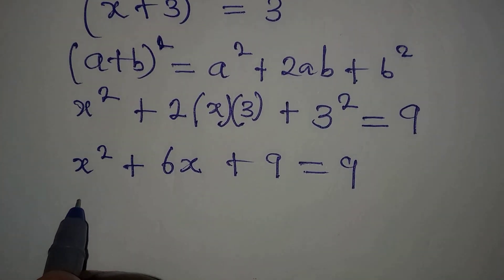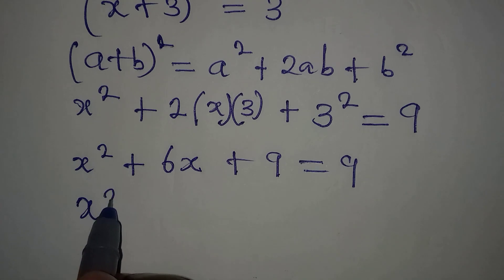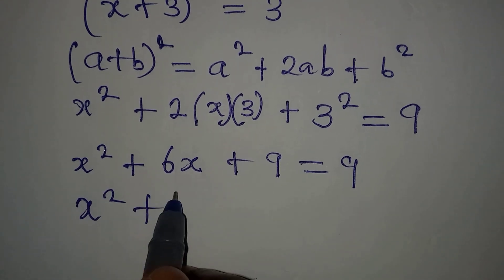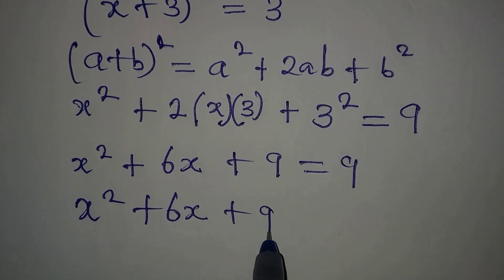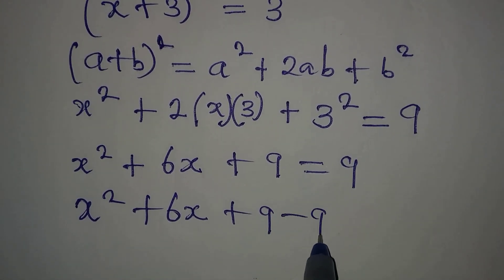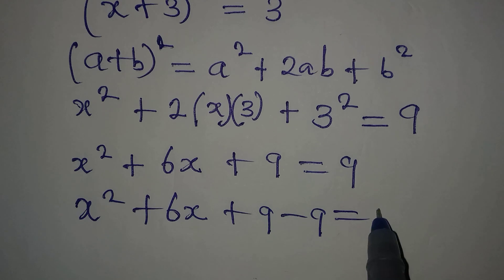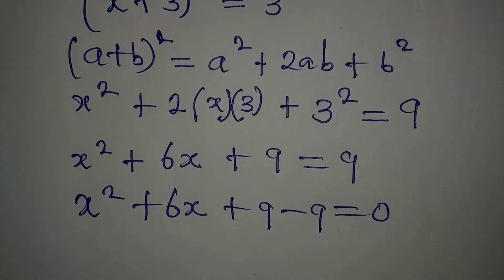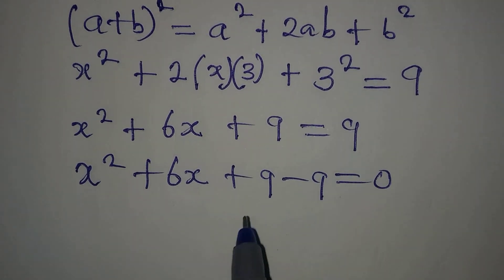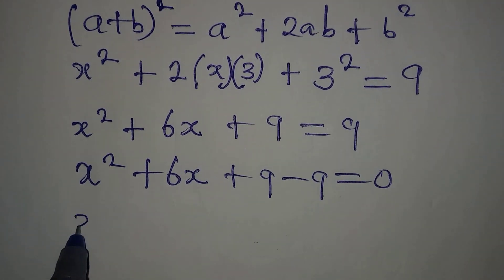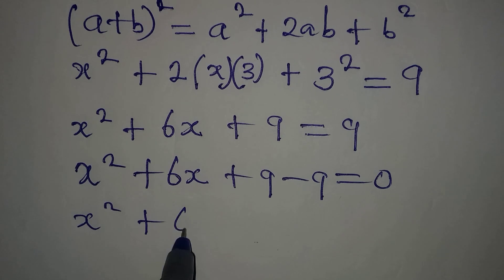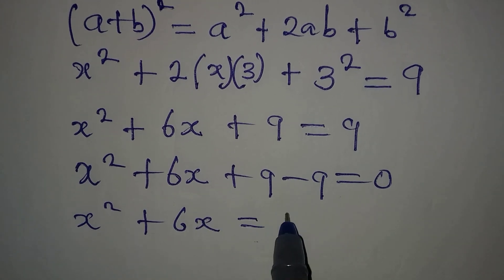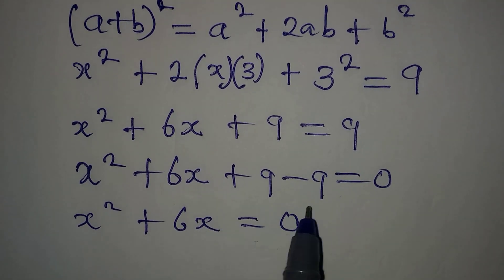This means we have x² + 6x + 9 − 9 equal to 0. I brought the 9 to the left. So x² + 6x is equal to 0, since 9 minus 9 is 0.